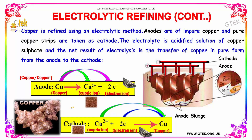Here is the reaction: at the anode, Cu → Cu²⁺ + 2e⁻, which is a loss of electrons — oxidation. At the cathode, Cu²⁺ + 2e⁻ → Cu, which is the gain of electrons — reduction.